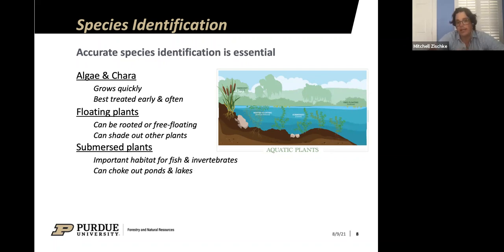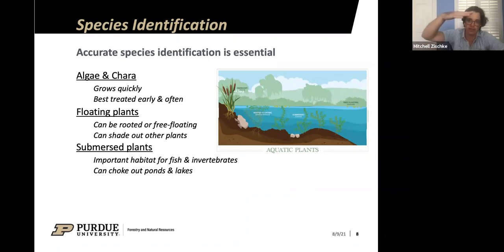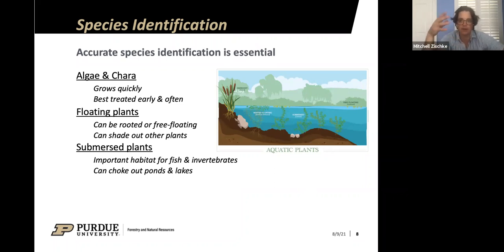Submerged plants are basically anything that grows in the water — typically rooted to the bottom and growing up through the water column. They may mat along the surface or have floating leaves, but they also have a lot of plant material in the water column. These provide a lot of habitat for fish and invertebrates, making them really important for the ecosystem, but they can also choke out ponds and lakes if they get too dense.